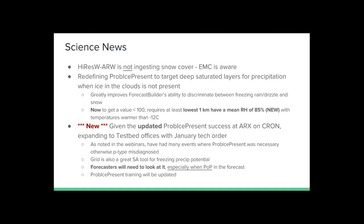The most notable event being the December 16th–17th icing event from Missouri — actually Kansas — eastward to Baltimore, where there were all these accidents, mostly from a loss of ice in the clouds. We need this grid to be populated, otherwise it's going to be a misdiagnosis of the P-type and the wrong impact. So, prob ice — we're going to put it on with this update to the National SmartNet. When this tech order comes out, the testbed offices will now have prob ice on cron, meaning forecasters will need to look at it especially when there's a POP in the forecast. We're going to get some new training out for prob ice.